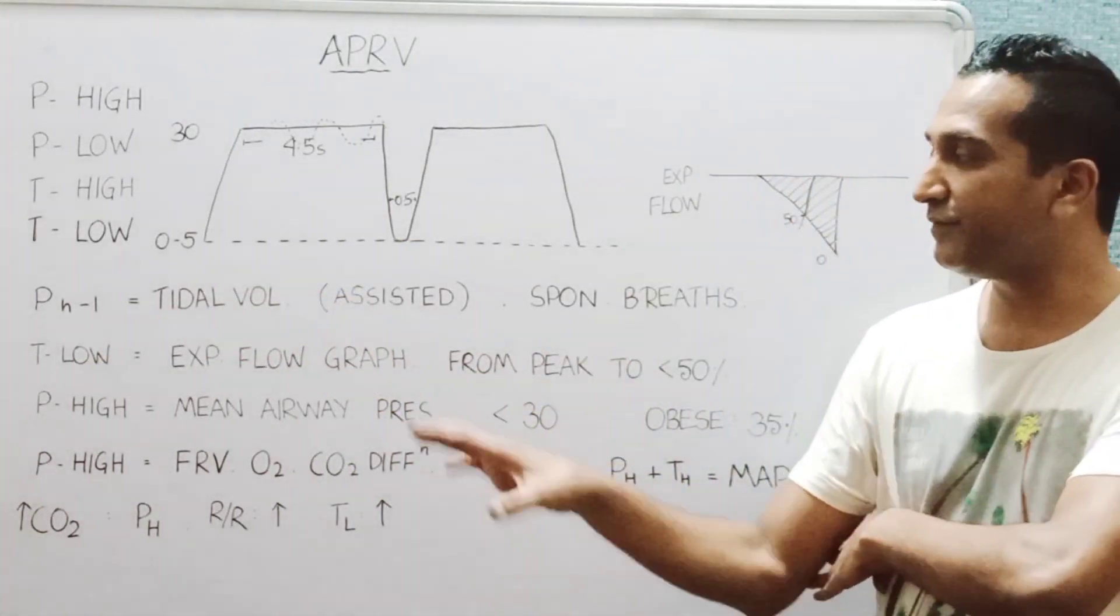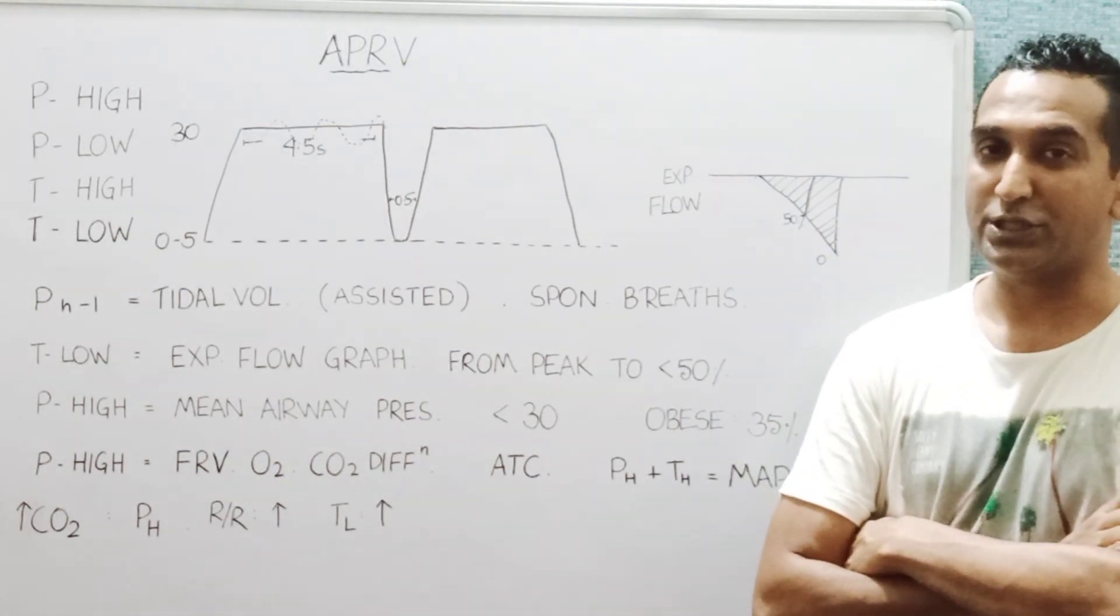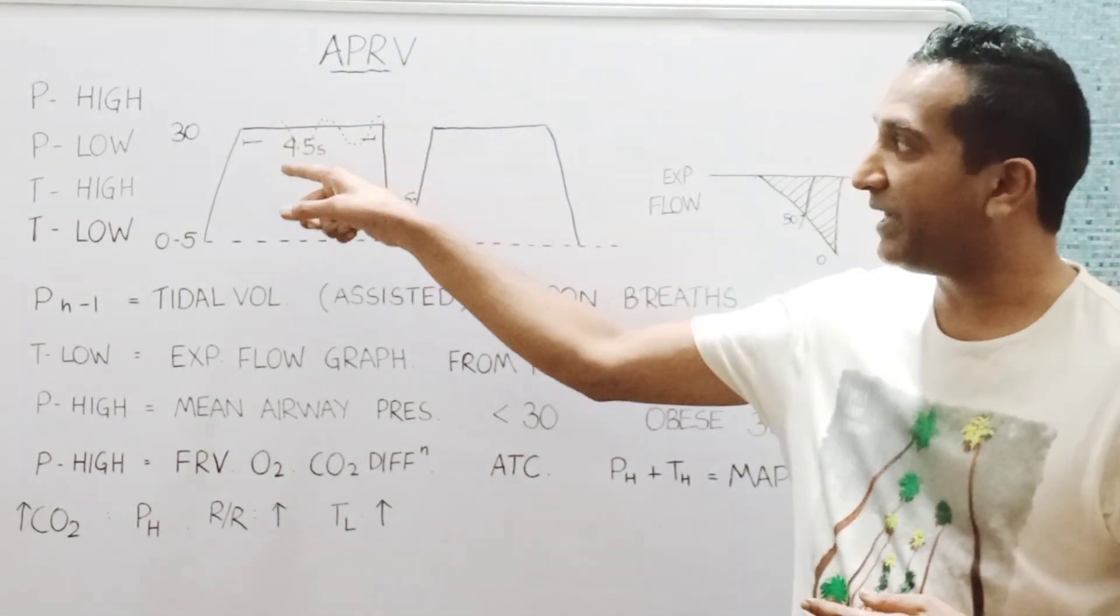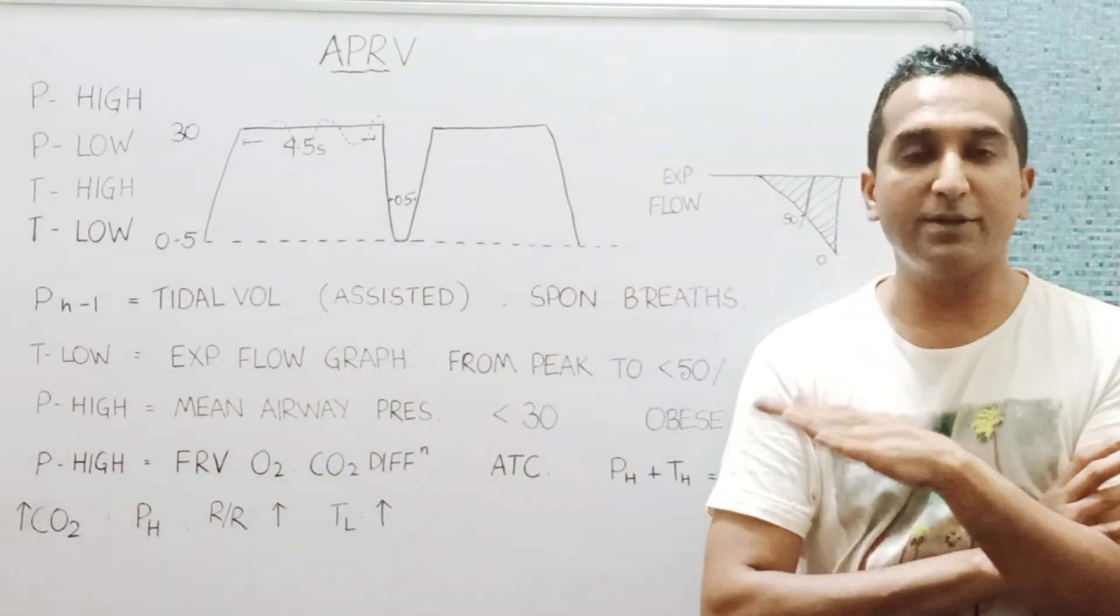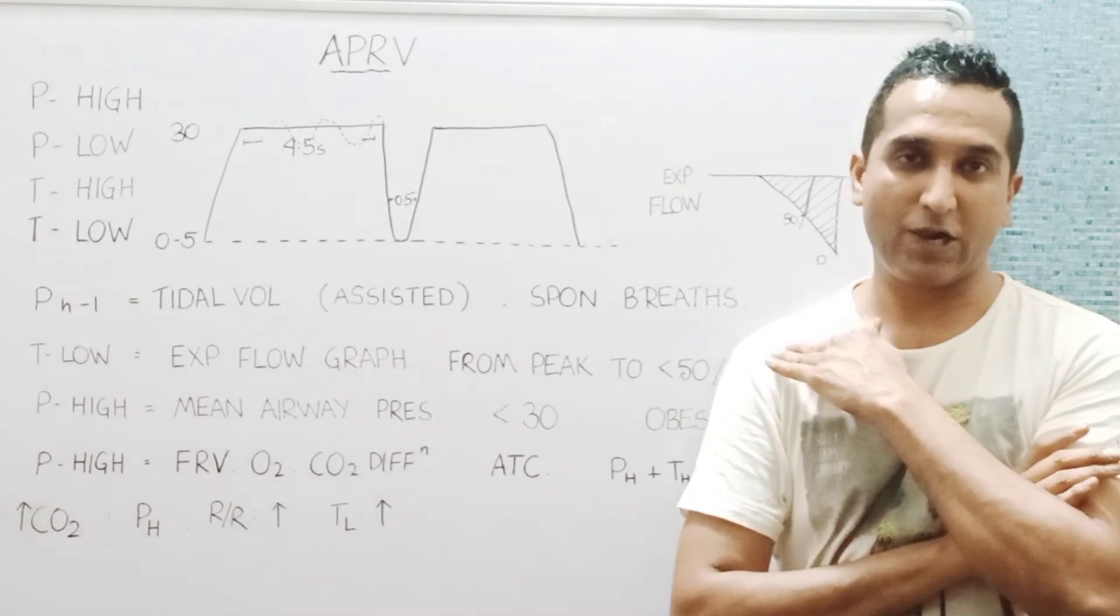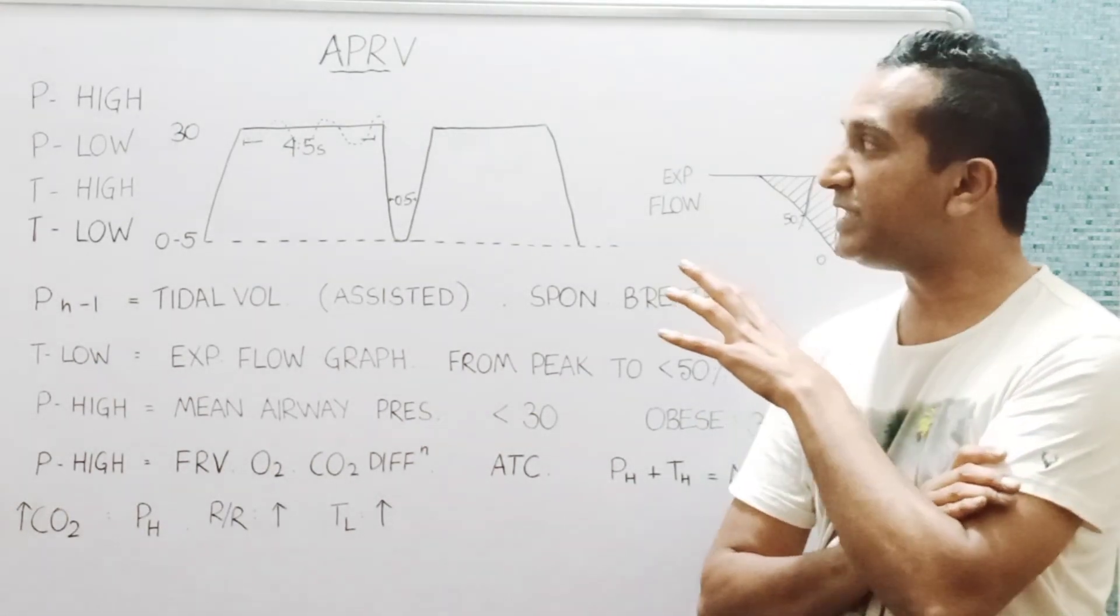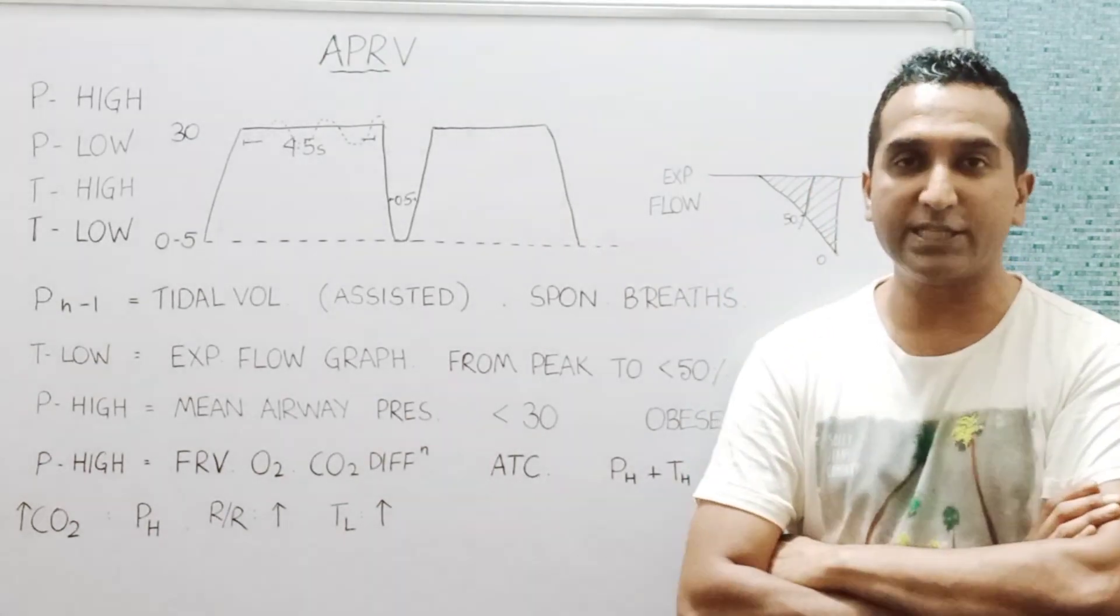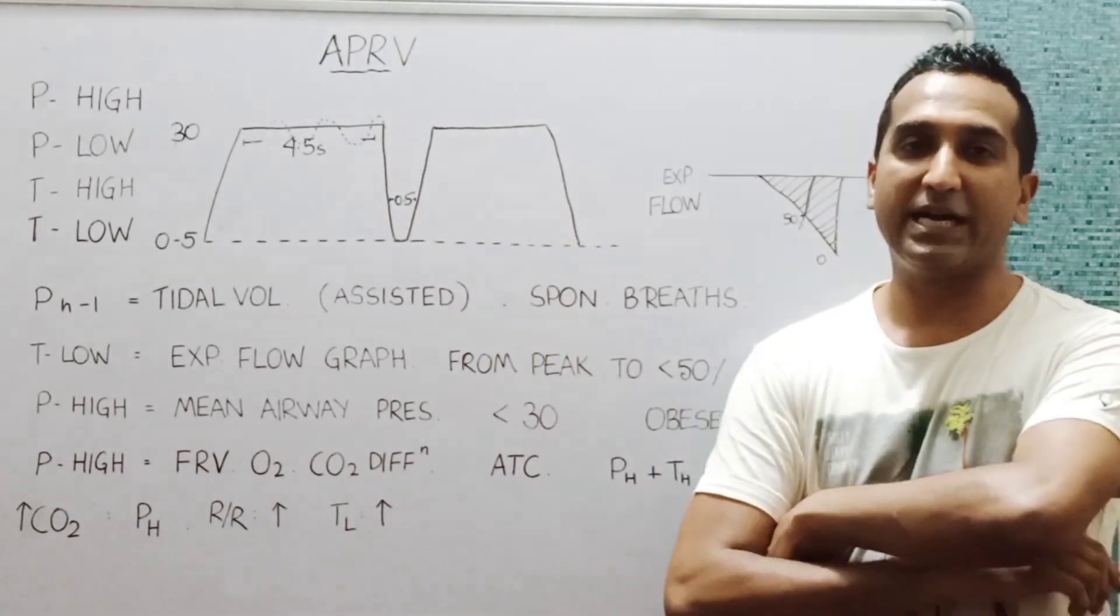The difference between the high and the low would determine the tidal volume, which is totally a ventilator-assisted breath, so there is no effort of the patient. Whereas at the P high, a dynamic expiratory valve allows the patient to breathe spontaneously.